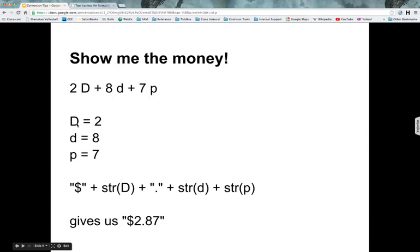Let's say in Python, we have these variables, D equals 2, which is the dollars, and small d equals 8, which is the number of dimes we have. And 7p will be the number of pennies we have. To format that, we just take a dollar sign, concatenate it with the string of D, that'll give us 2, and then we put a dot for the decimal, and then the string of the number 8 and the string of the number 7, which is in the variable p and d, respectively.